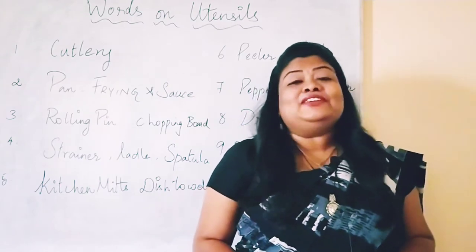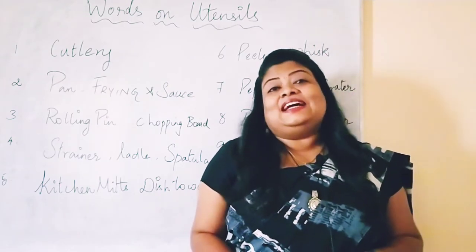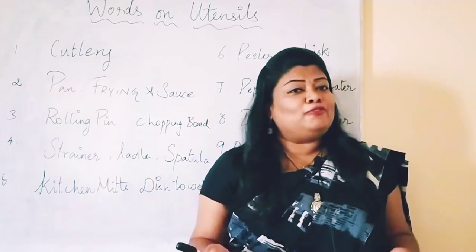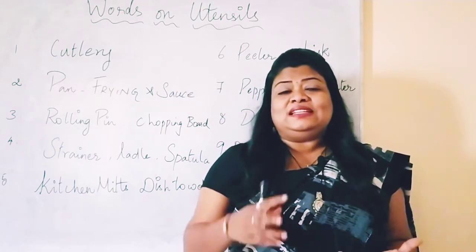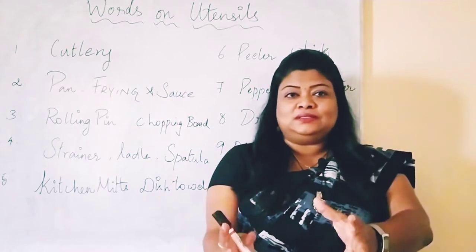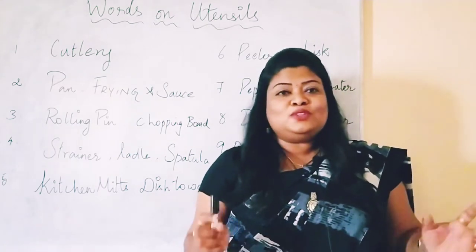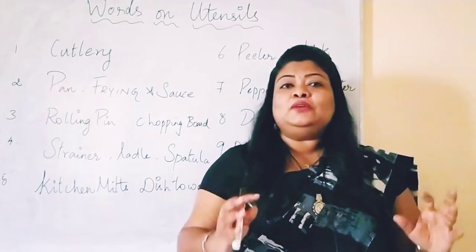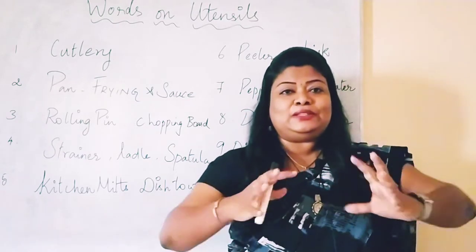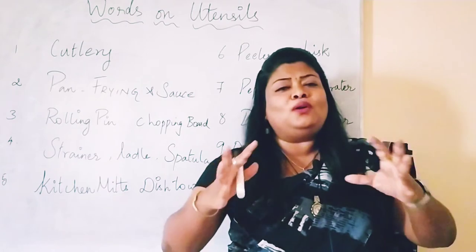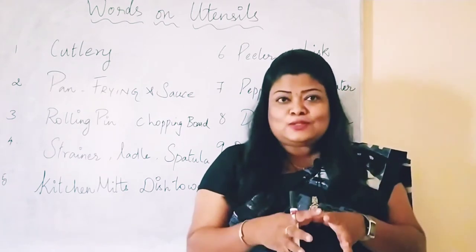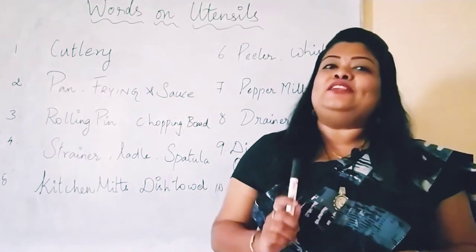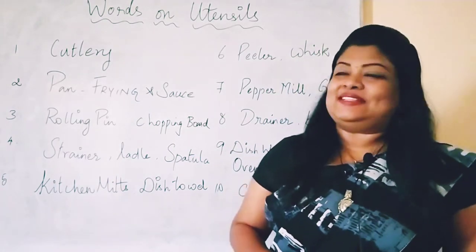The first word is cutlery. What is cutlery? We use day-to-day spoons, forks and knives. Generally, cutlery also includes a bowl. Those things are collectively called cutlery. This is a combination word — everything is put together. The first word is cutlery. Try to use this word from today onwards.